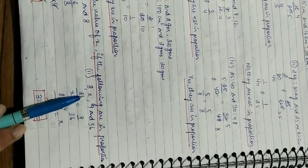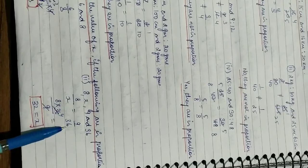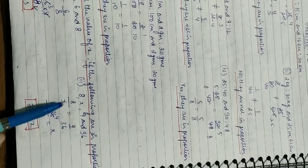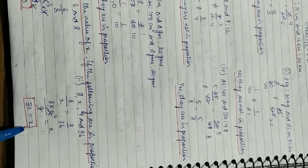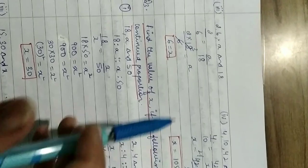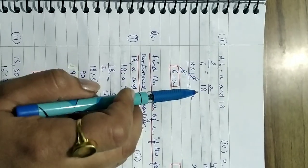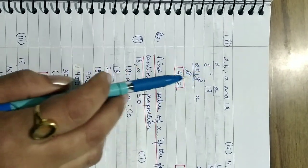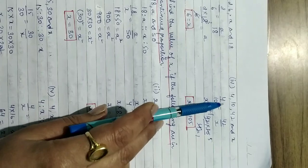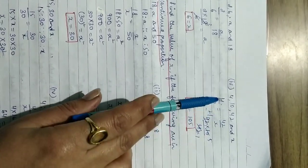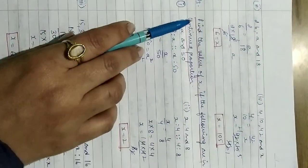Second part: 8, x, 9, 36. We write 8 by x equals 9 by 36. Shifting x, we get x equals 8 times 36 by 9, so x equals 32. Third part: 2, 6, x, 18 gives x equals 6. Fourth part: 4, 10, 42, x — write 4 by 10 equals 42 by x and calculate x easily.